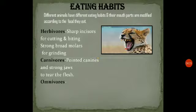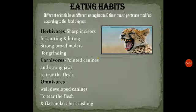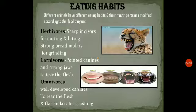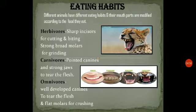And in omnivores — omnivores eat a variety of food. They have canines to tear the flesh and flat molars for crushing. Because omnivores eat flesh and also eat plant products. So to tear the flesh they have canines, and to grind and crush the food they have flat molars.